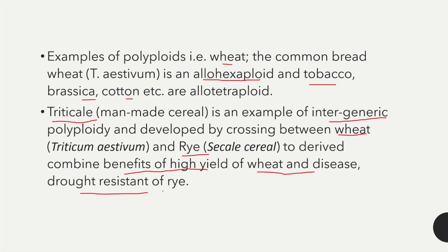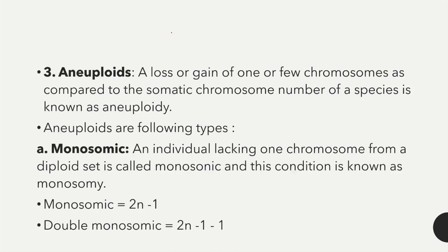The third condition is aneuploidy — a loss or gain of one or few chromosomes as compared to the somatic chromosome number of a species. Aneuploidy ka matlab hota hai jab somatic chromosome number mein kuch bhi loss or gain hota hai, is condition ko hum aneuploidy bolte hain.